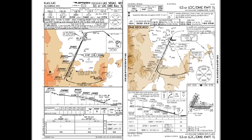The first thing we're going to look at is at the very top. If you look at the approach name on the Jeppesen chart, it very clearly states what approach it is — the ILS or localizer DME-1L — which is still fairly easy to understand but creates a little bit of confusion with the slash in the localizer slash DME-1L. Also, on the Jeppesen chart, Las Vegas is at the very top, so if you're flipping through it's easier to see, whereas on the FAA chart it's in smaller text at the bottom.